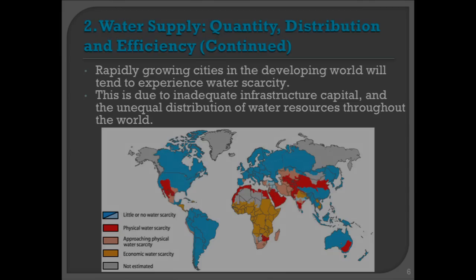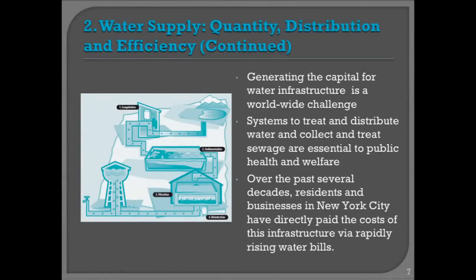Rapidly growing cities in the developing world are the places where we're going to see the most water scarcity. About three years ago, the UN reported that more than half of the planet now lives in cities. And in many of these emerging cities, the issue of water is a real problem. There is not enough capital for the infrastructure. The kinds of investments we've made here in New York simply can't be made in other parts of the world because they don't have the capital, and the water is not plentiful nearby.